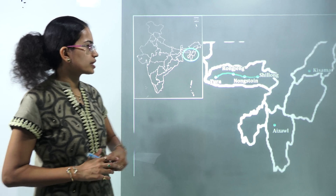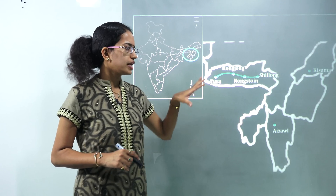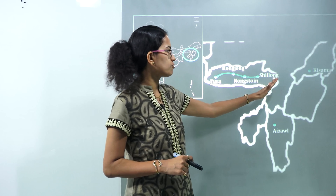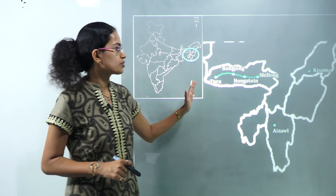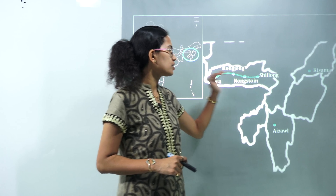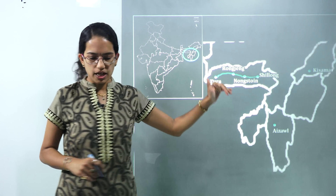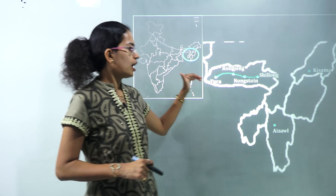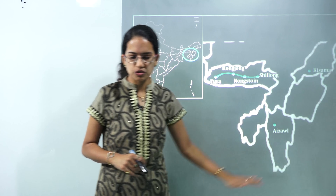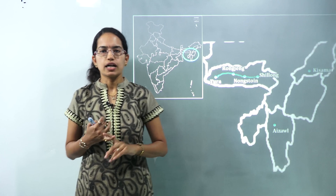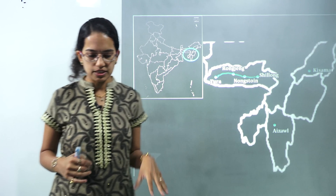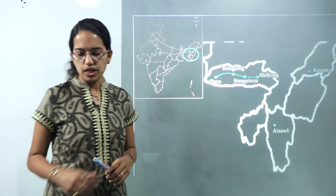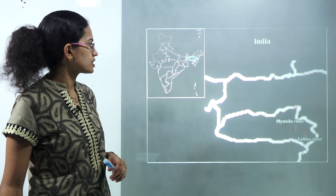The next important locations are in the Northeast. There is a national highway running from Shillong to Tura passing through Nongstoin. Along with that, Aizawl is important because the Kaladan multimodal transit system is coming up there. Those are the key locations in the Northeast.